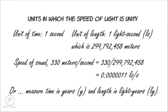If we do that, the speed of light is one light second per second. This will make our day-to-day velocities very small — for example, the speed of sound is roughly 330 meters per second, which becomes approximately one millionth of a light second per second. In other words, the speed of sound is about one millionth of the speed of light.